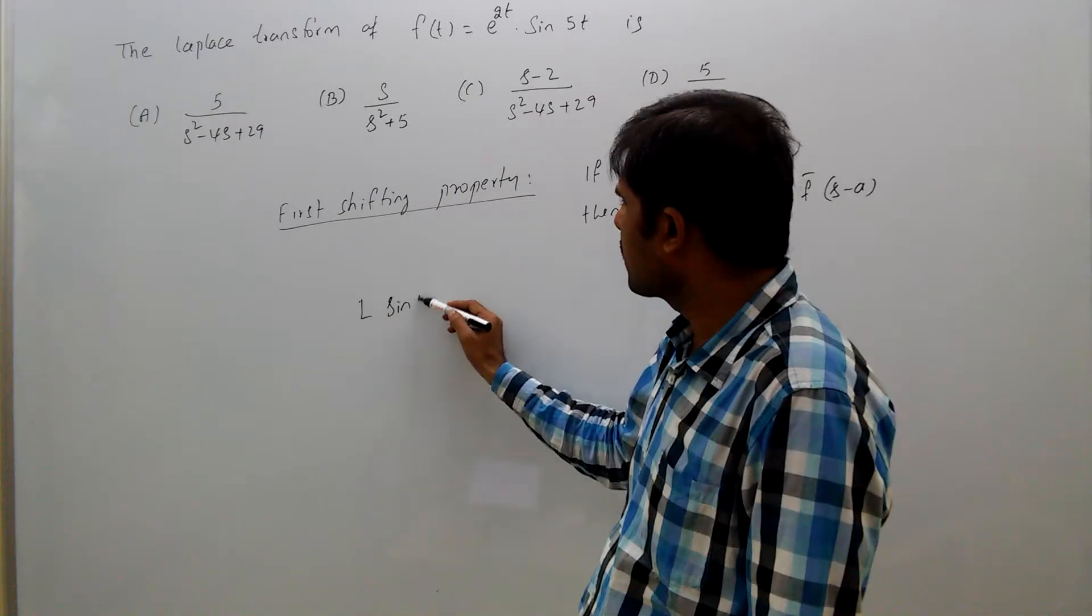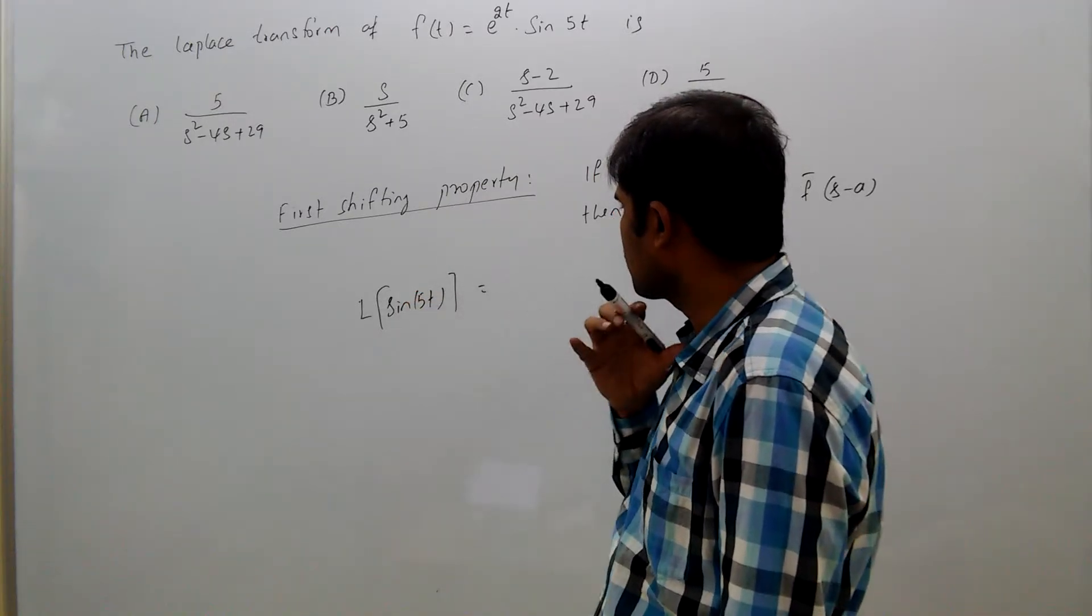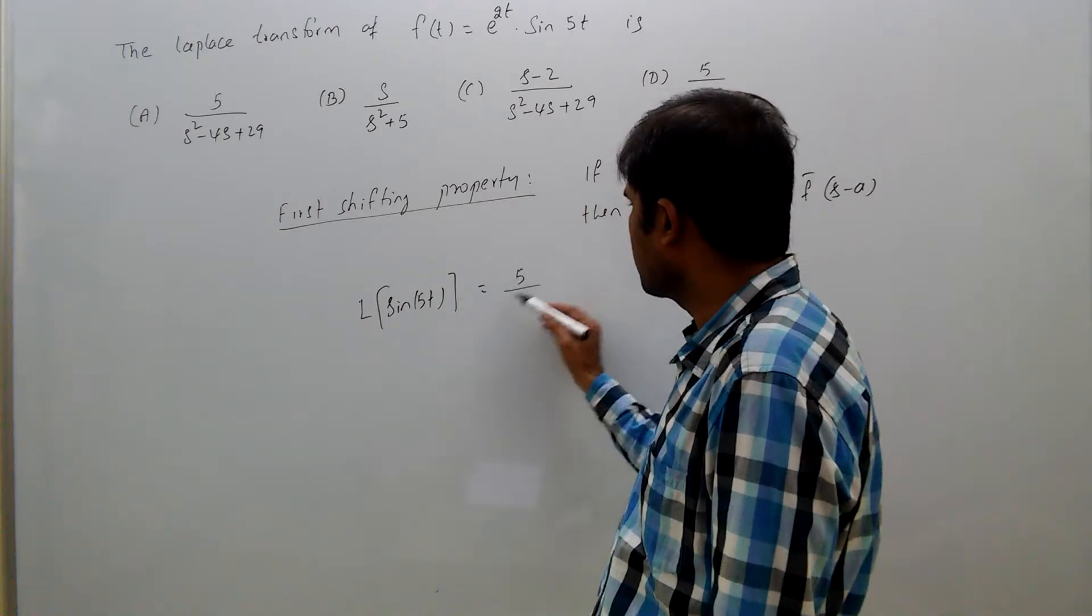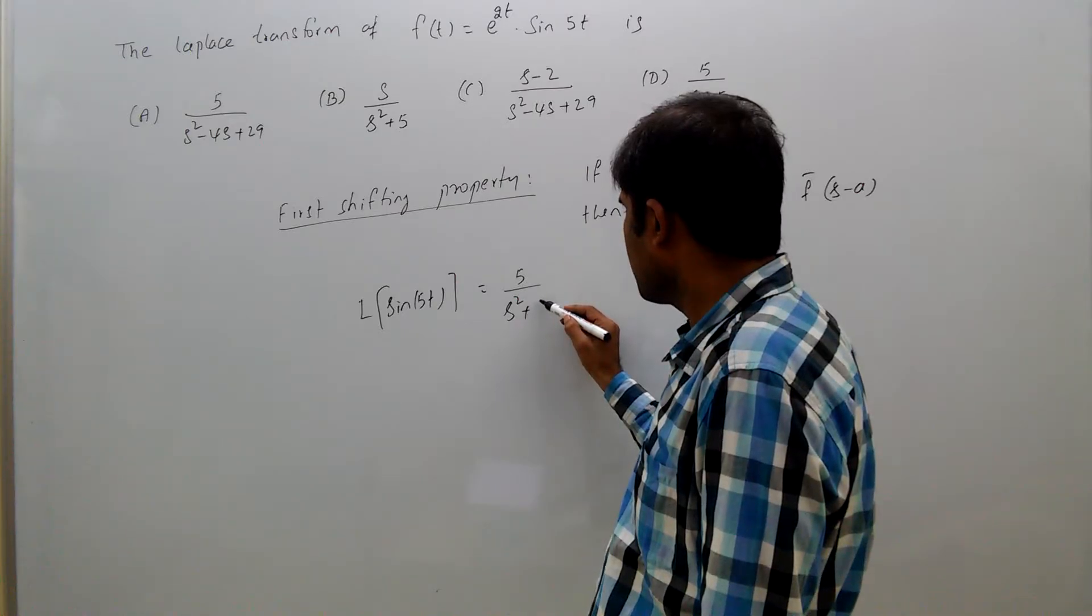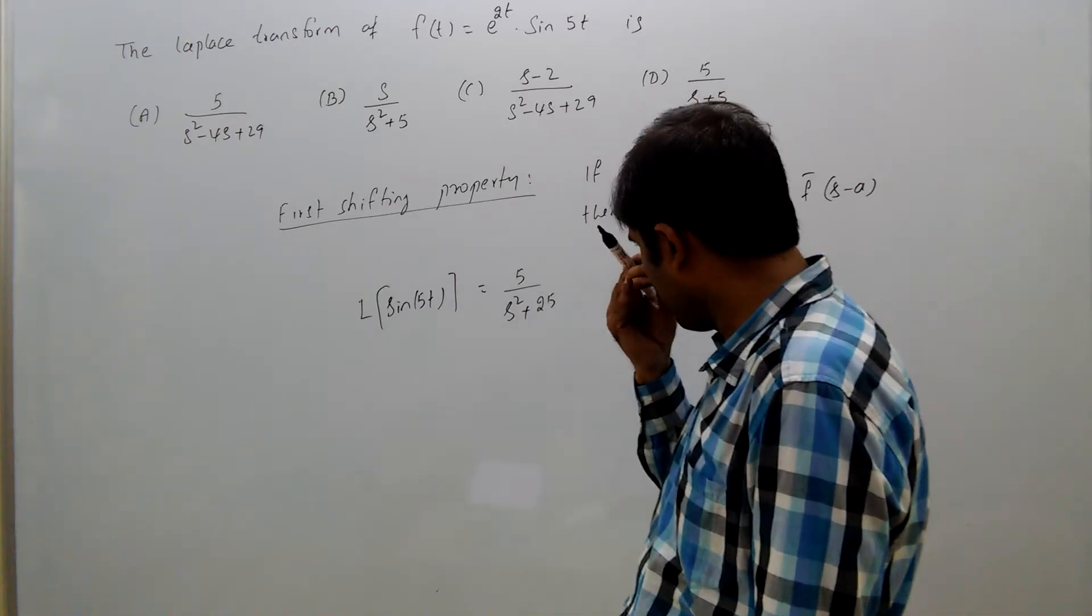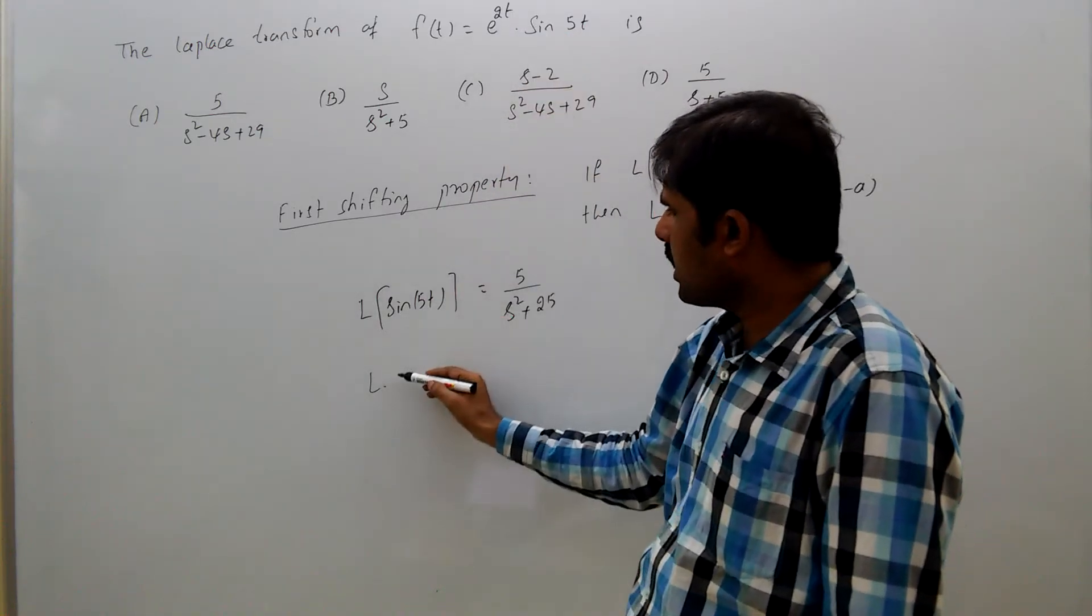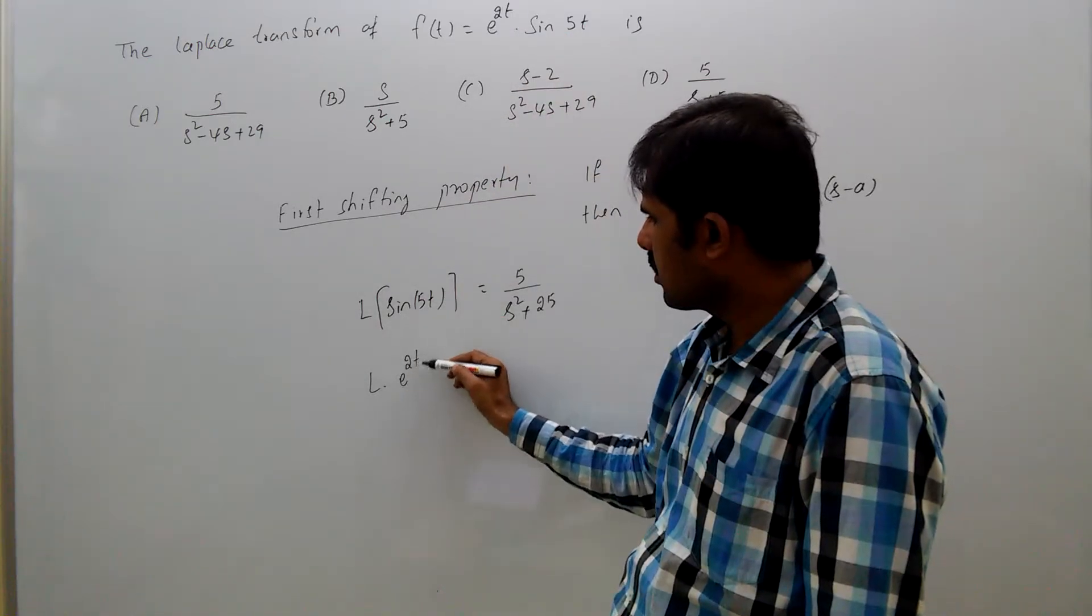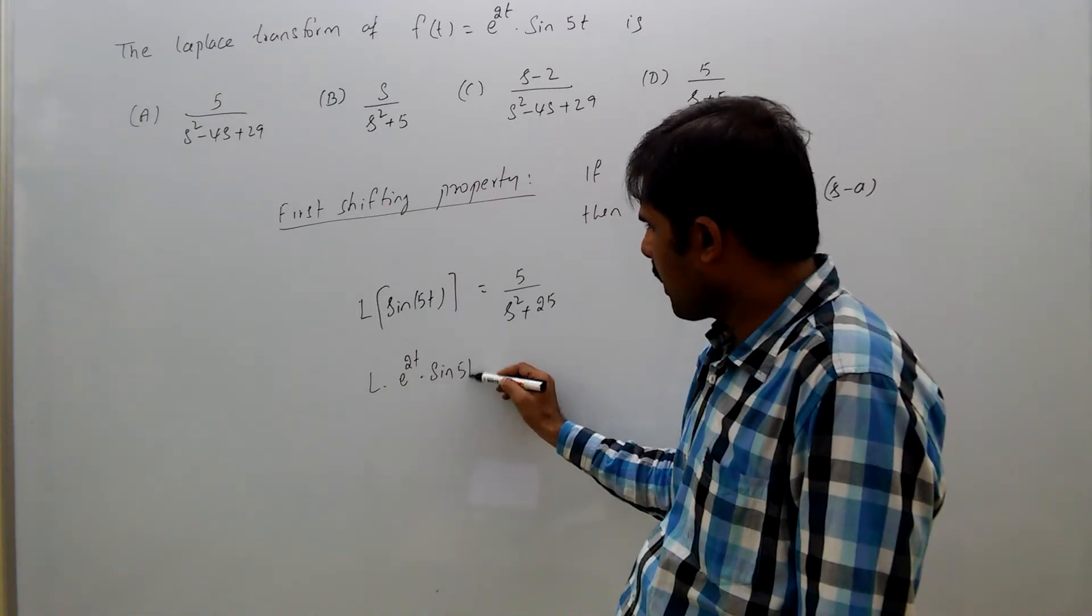we know L{sin(5t)} = 5/(s^2 + 25). Now when e^(2t) is multiplied with sin(5t), we simply substitute s with (s-2),